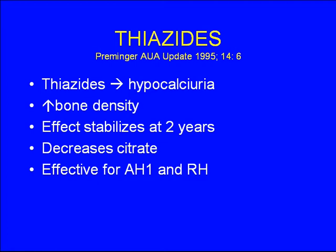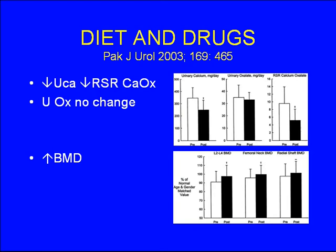Thiazide diuretics are also helpful not only for reabsorbing calcium and promoting hypocalciuria, but they increase bone mineral density — work demonstrated by Preminger. This effect stabilizes after about two years, so the regimen is to keep patients on thiazide for two years, take them off for three to six months to allow their body to become naive to the drug, then restart. This addresses the criticism from endocrinologists that reducing dietary calcium would promote osteoporosis over time.